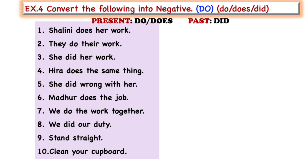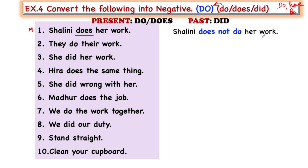In this exercise we solve sentences containing 'do,' 'does,' or 'did' — the do family. Do, have, and be are the three main helping verb families. Here 'does' is working as a main verb since it is alone in the sentence. So we take the help of 'does' as a helping verb: 'Shalini does not do her work.' The first 'does' is the helping verb, 'not' follows, and 'do' is the main verb. This is the formula and sequence.